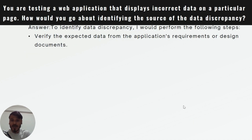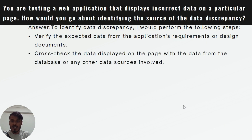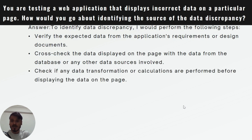The last question: you are testing a web application that displays incorrect data on a particular page — how would you identify the source of the data discrepancy? I would analyze the expected data from the application requirements or design documents, and cross-check the data displayed on the page with data from the database or other data sources involved. I would also check if any data transformations or calculations are performed before displaying the data.